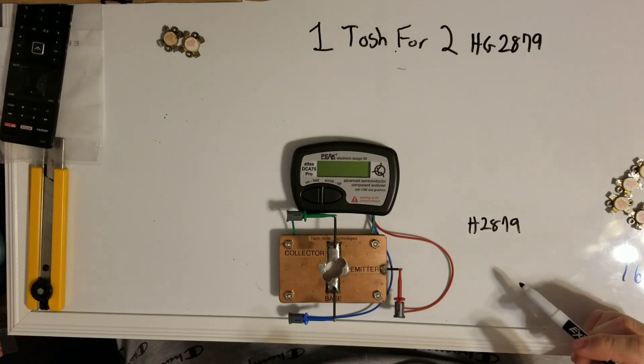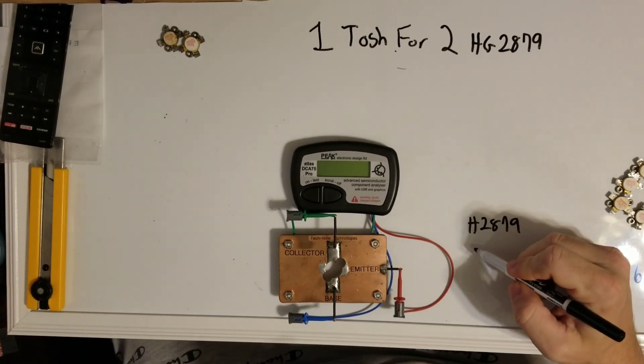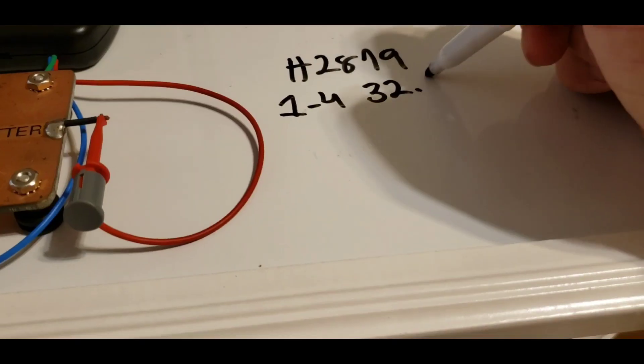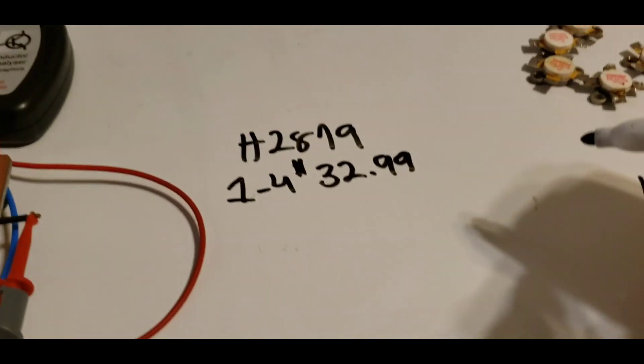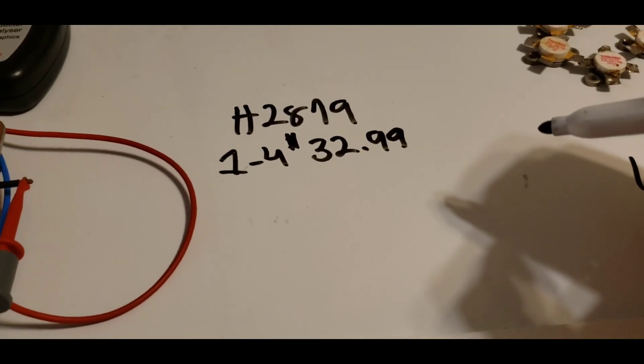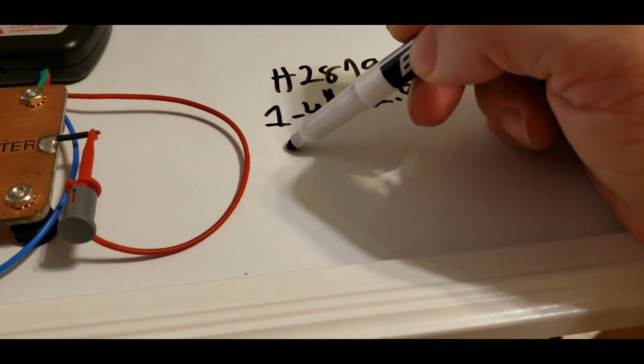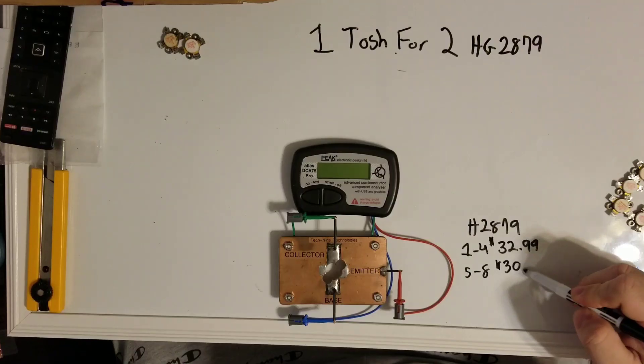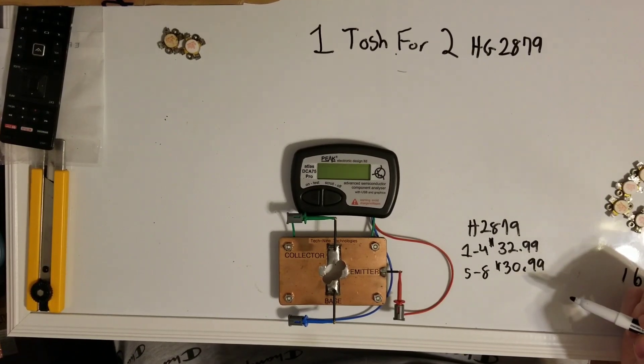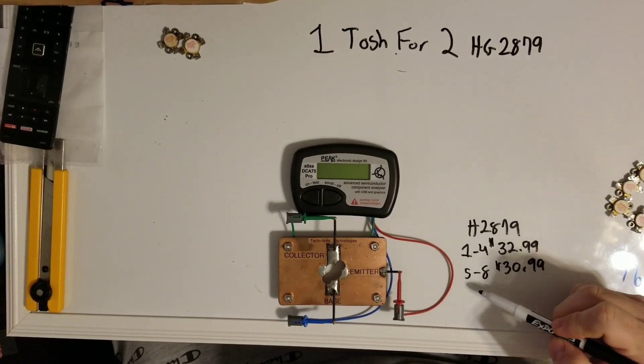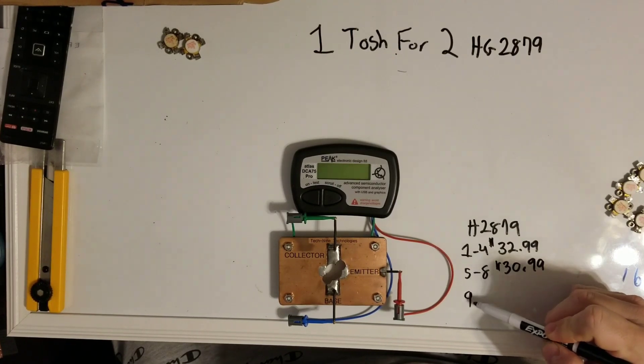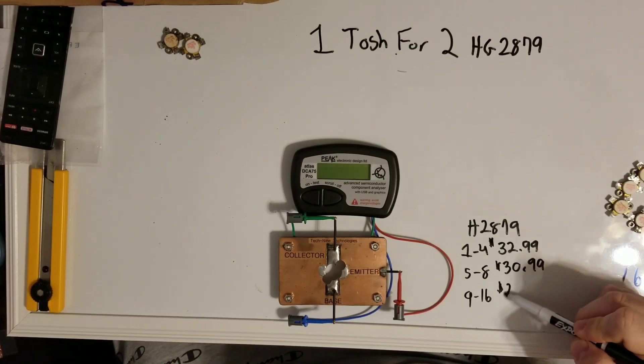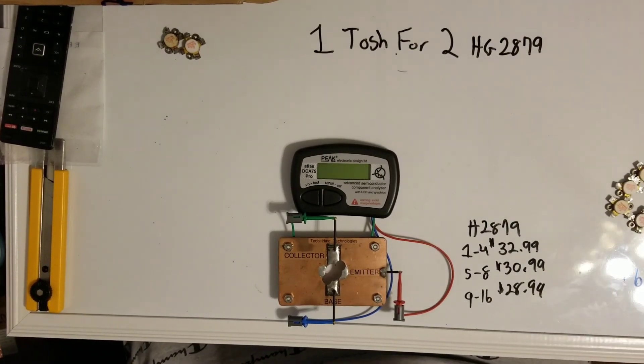Now let me share this with you. Now this is retail. Here's the price. Here's the price in a linear fashion going from top to bottom. One to four, it's $32.99 a piece. Five to eight, it's $30.99 a piece. Nine to sixteen, it's $28.99. That's how the price works out.